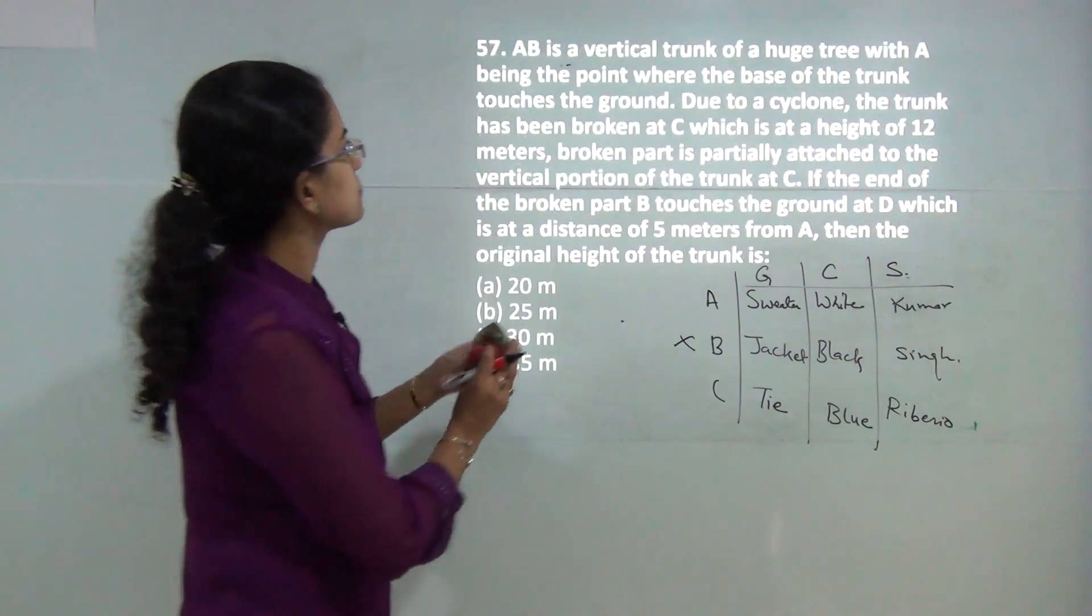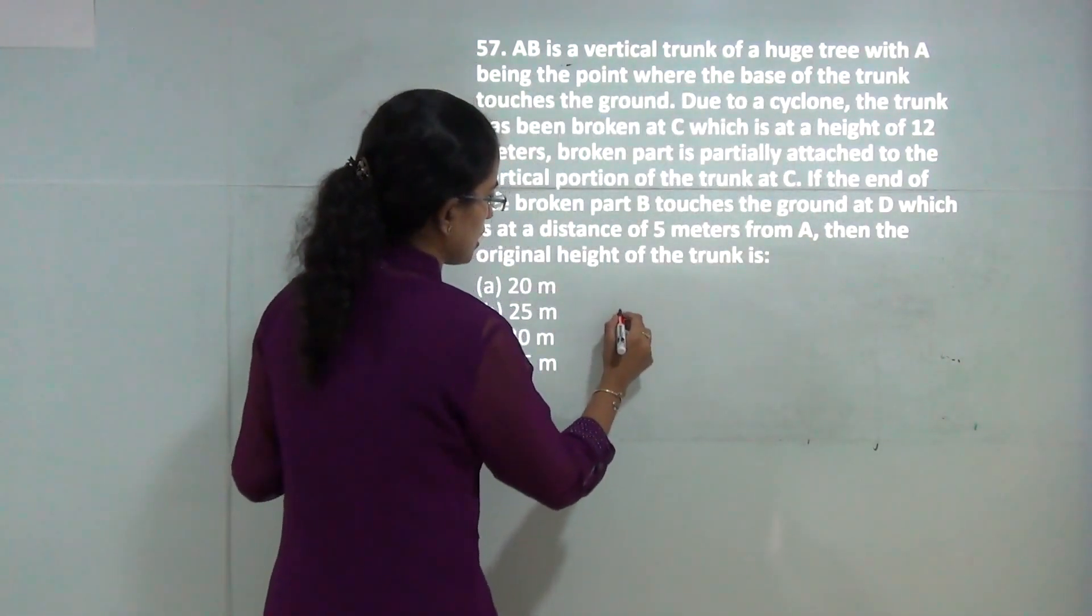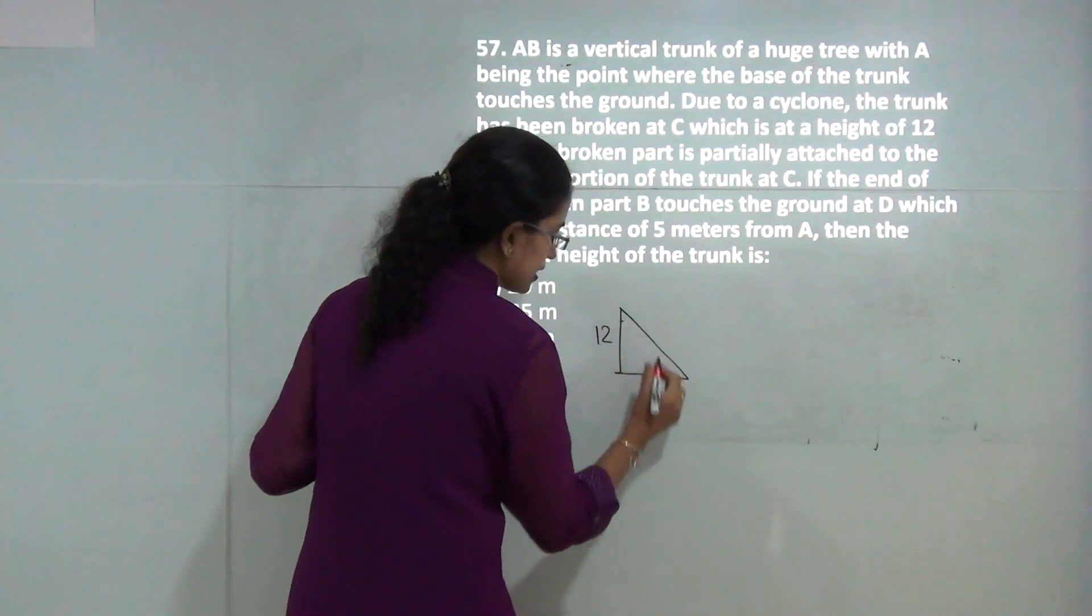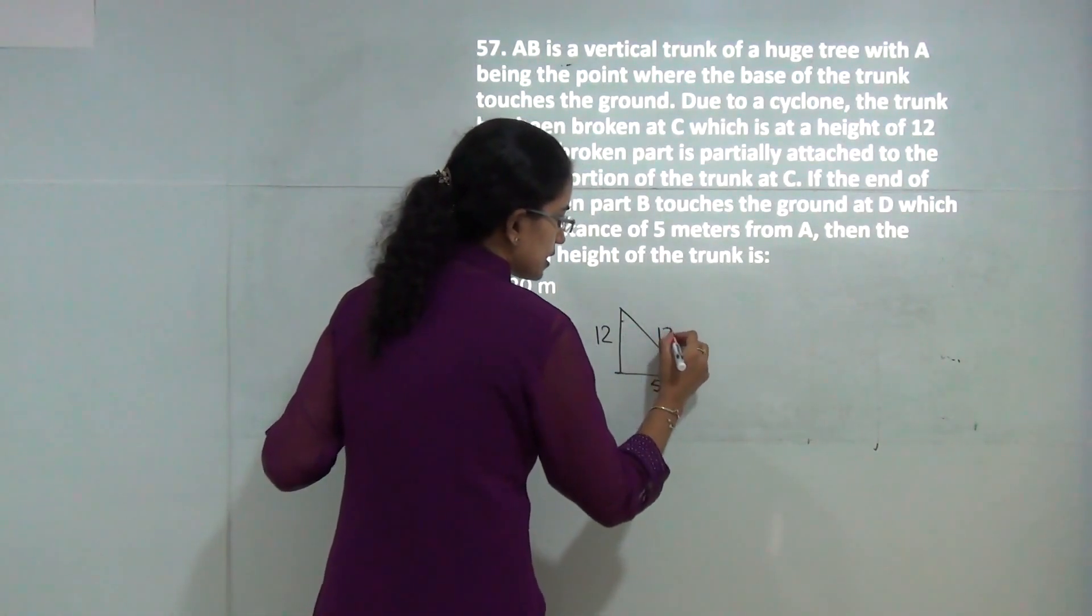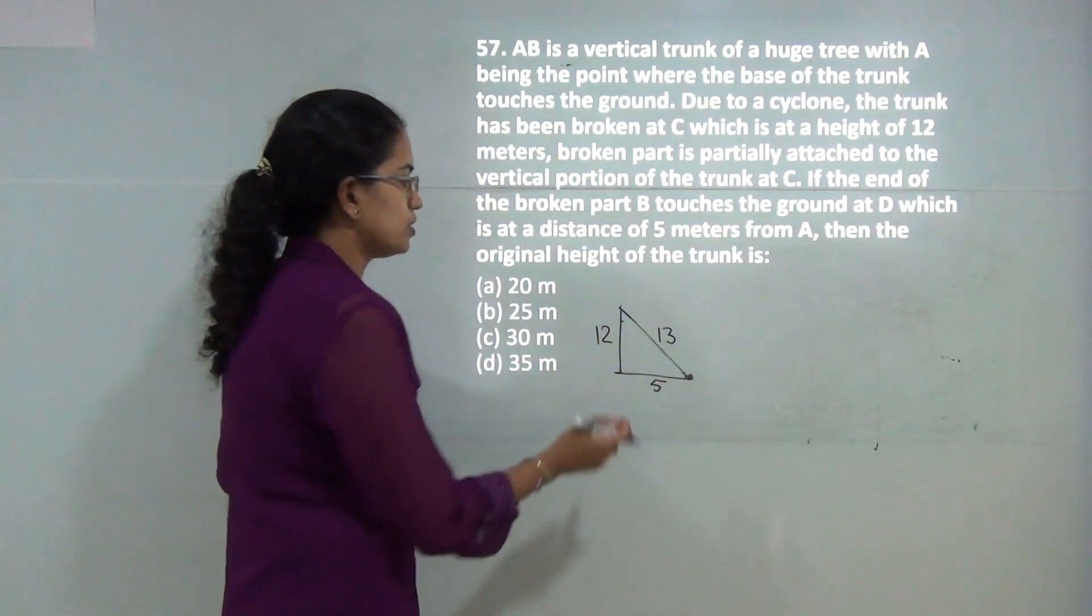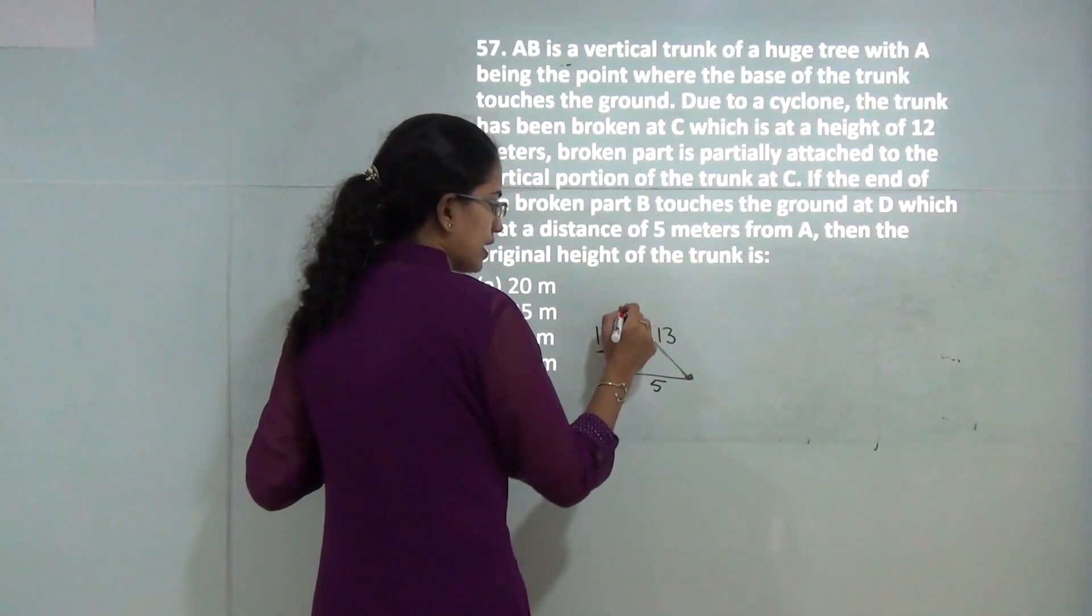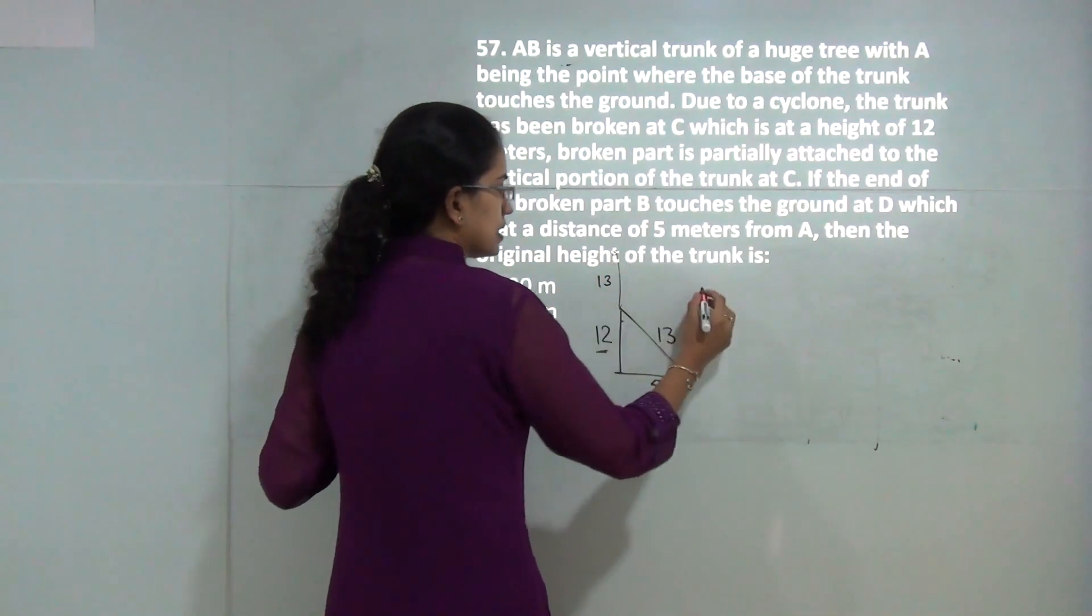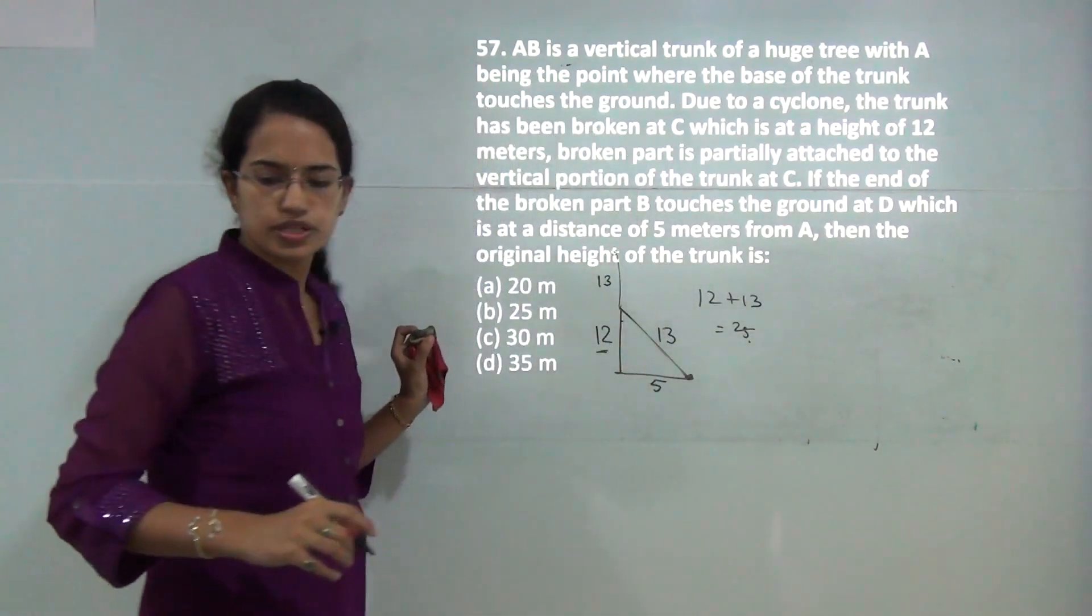Next question: AB is a tree that broke at point C and falls down. It's 12 meters high, falls down still attached, and is 5 meters away. By Pythagoras, this would be 13, and this part is the broken section. The original height includes this 12 and the 13 that was standing before, so 12 plus 13 equals 25 meters.